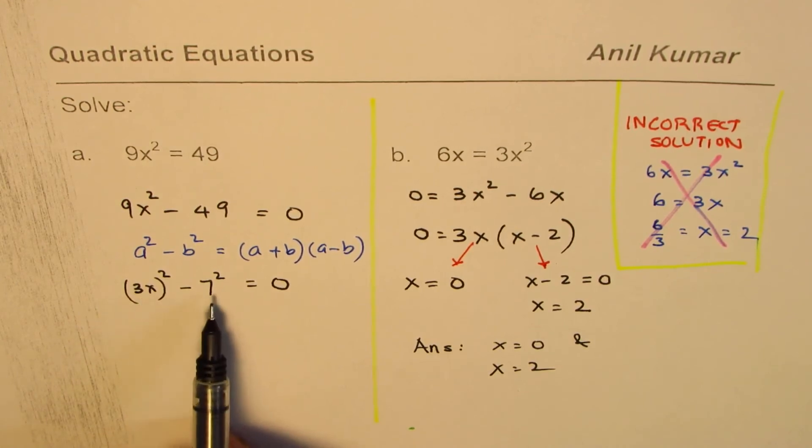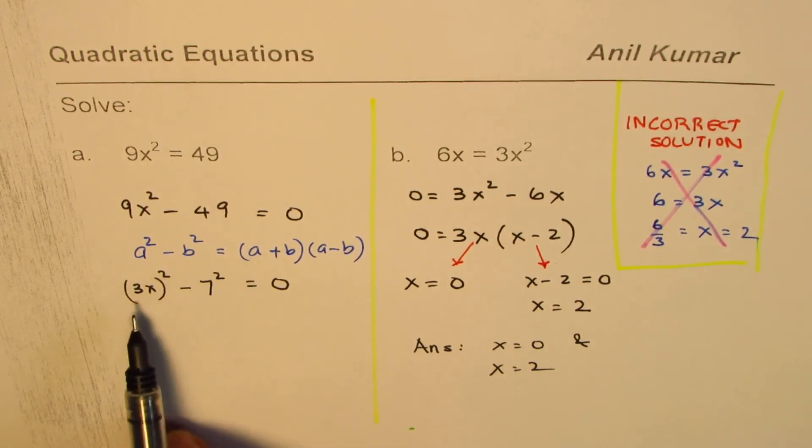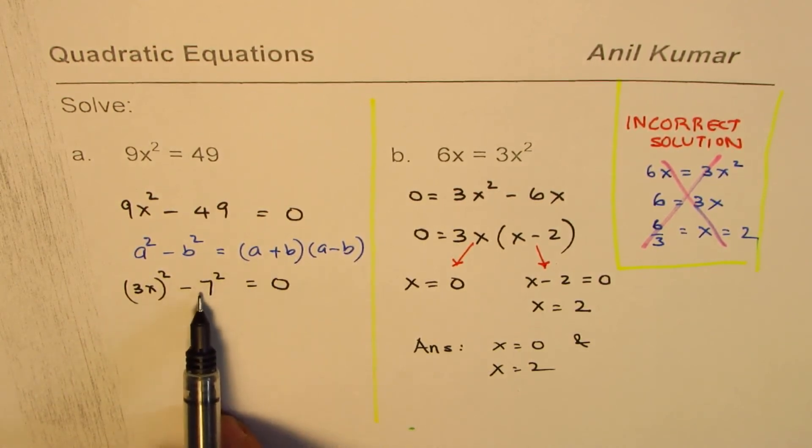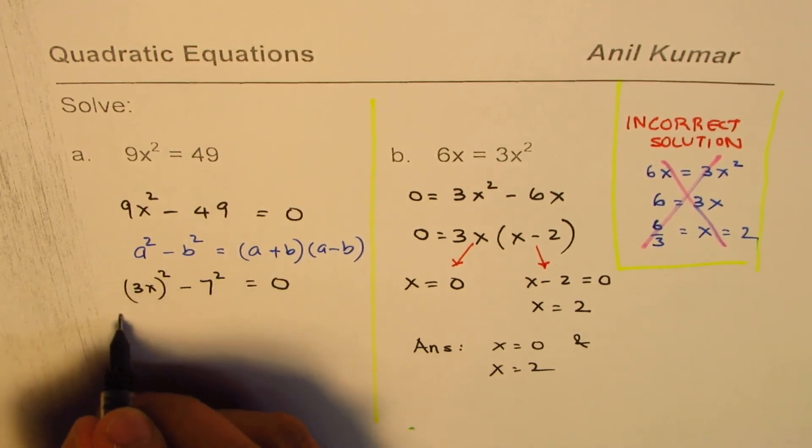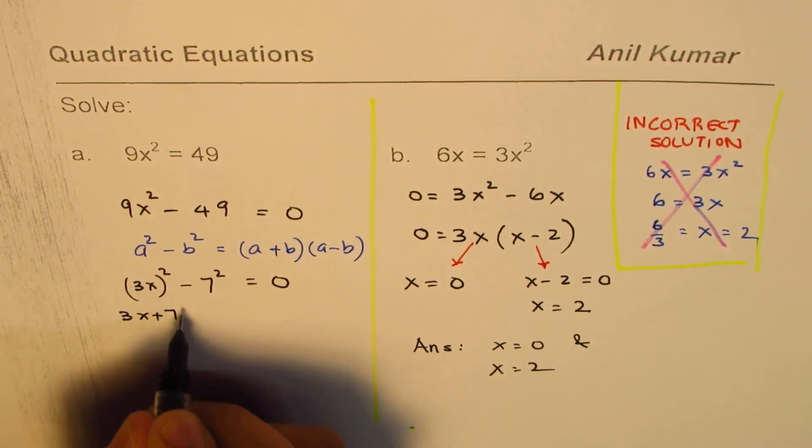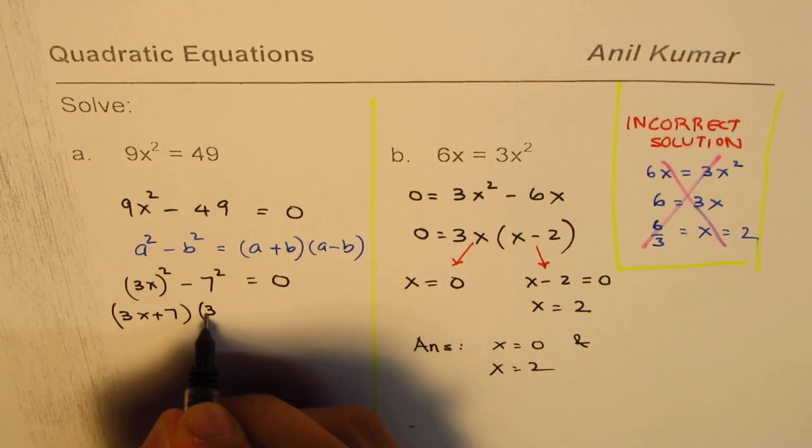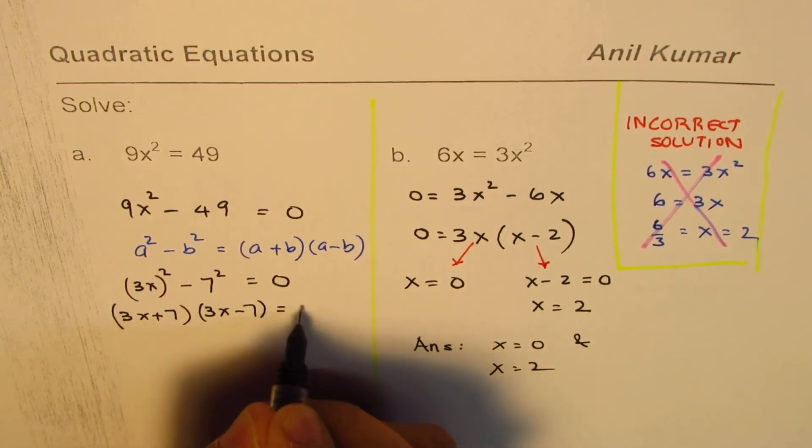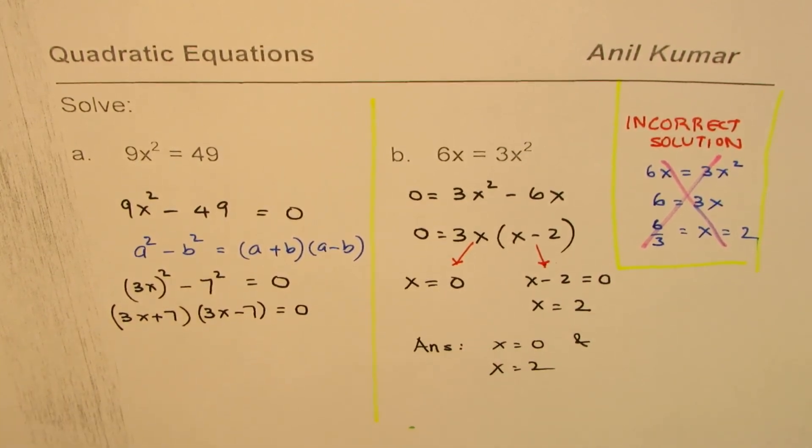So a is 3x, b is 7 for you. a is 3x, b is 7. So we could write this as 3x plus 7 times 3x minus 7 equals to 0. So that gives you the factored form.